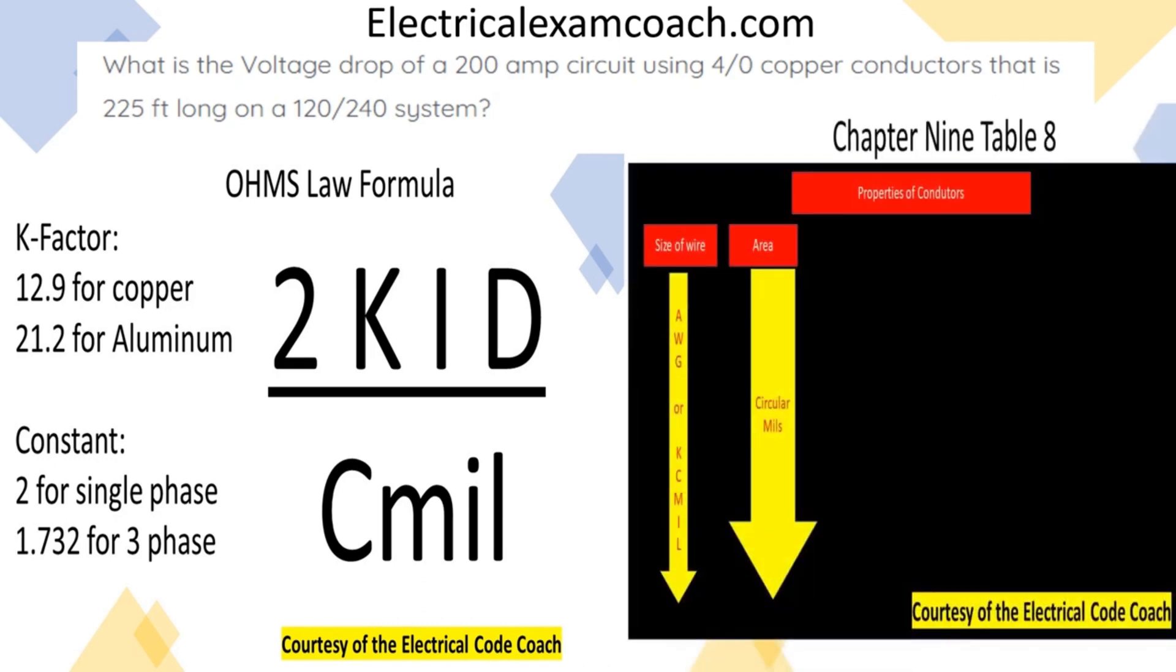In order to get that information, we're going to head over to Chapter 9, Table 8. We're going to start on the left-hand side until we find our conductor. Then we're going to come over and we're going to get our C-mills.